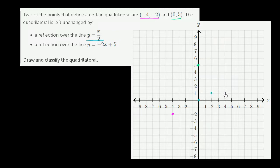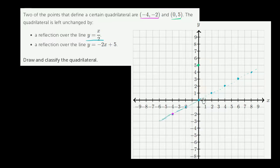Another way to think about it: y is always 1 half of x. When x is 4, y is 2. When x is 6, y is 3. When x is 8, y is 4. We can connect these. When x is negative 2, y is negative 1. When x is negative 4, y is negative 2 — so it actually goes through that point. This is the line y is equal to x over 2, with a slope of 1 half.